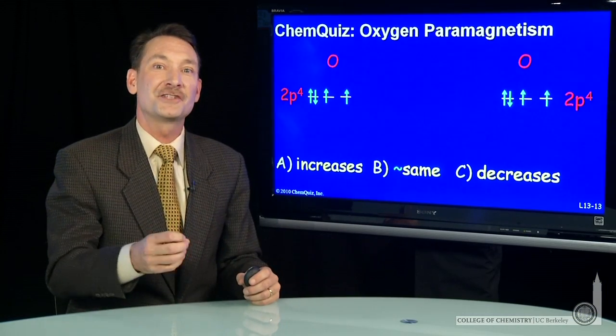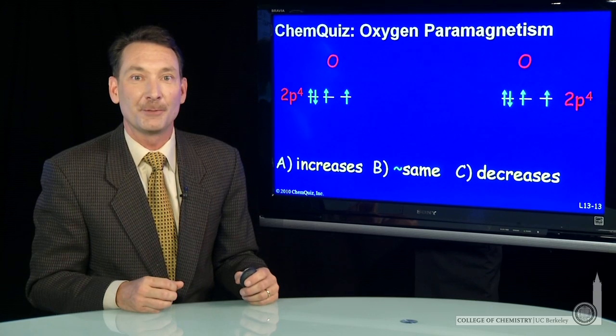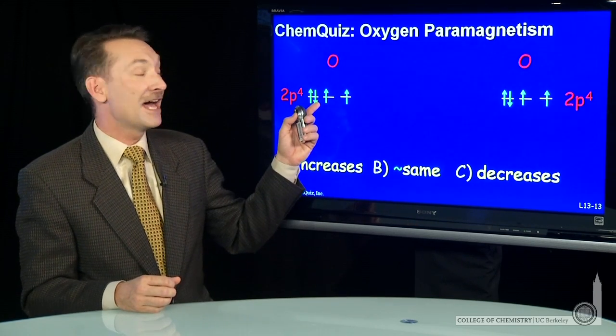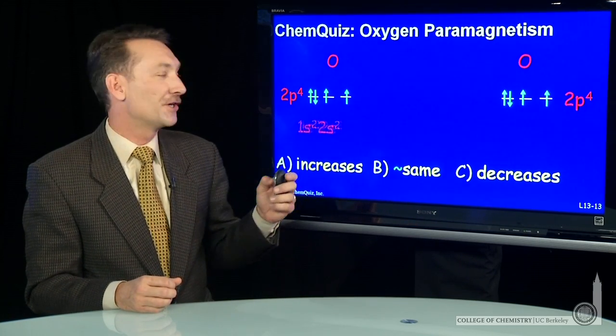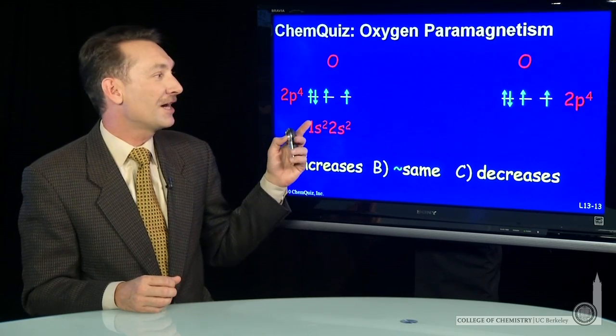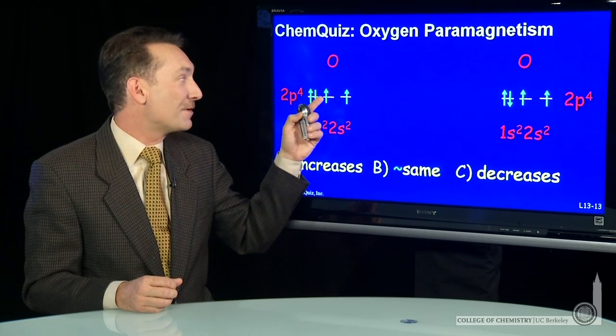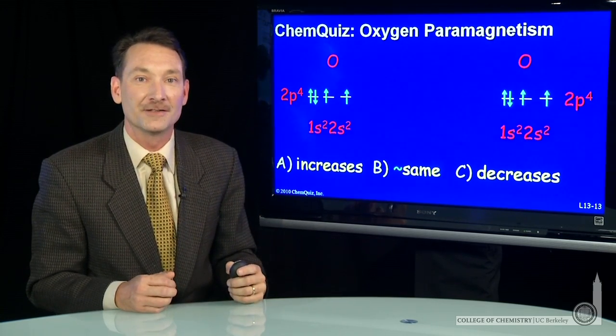We're looking at the reaction of oxygen atoms to form oxygen molecules and the total paramagnetism of the sample. So oxygen atoms have the electron configuration 1s2, 2s2, 2p4. So oxygen atoms are paramagnetic, and they're di-paramagnetic. They each have two unpaired electrons.